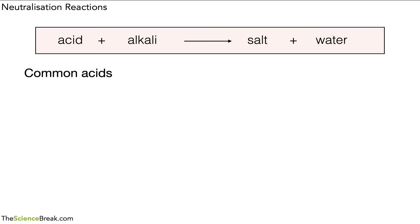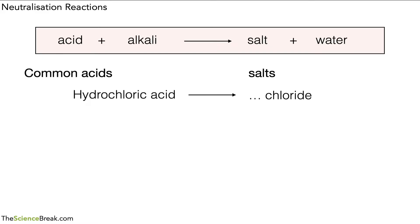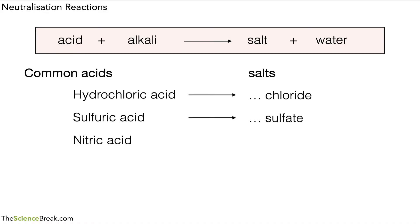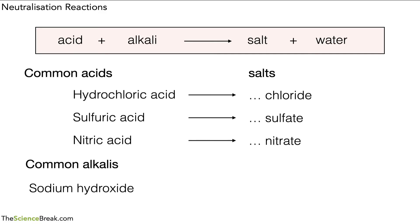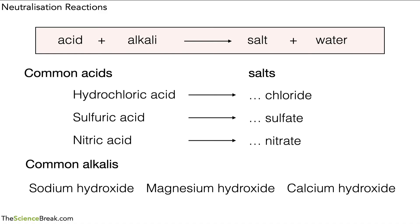To help us, we need to know the names of some common acids and the types of salts they produce in a neutralization reaction. Hydrochloric acid produces a chloride salt — something chloride. Sulfuric acid produces a sulfate salt — something sulfate. Nitric acid produces a nitrate salt — something nitrate. It's also useful to know some common alkalis: sodium hydroxide, magnesium hydroxide, and calcium hydroxide. There are more, but these are the ones we'll be working with today.